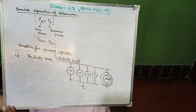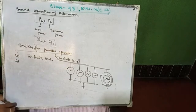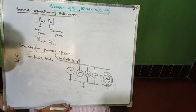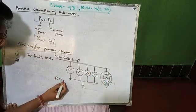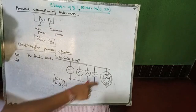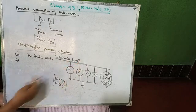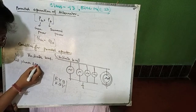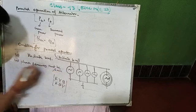Second condition: the phase sequence of the incoming alternator must be the same as that of the running alternators or infinite bus. Every alternator has three phases — RYB or RBY — there are two possible phase sequences, so the phase sequence must be the same.